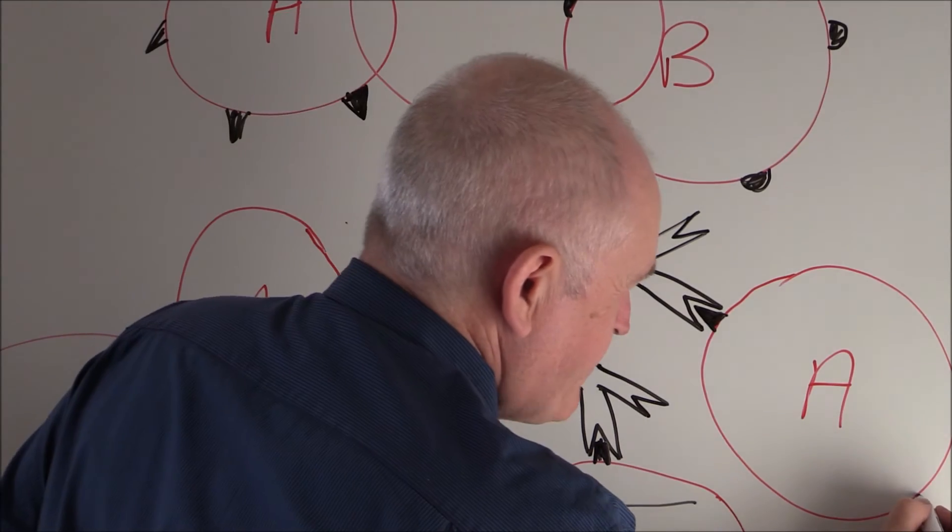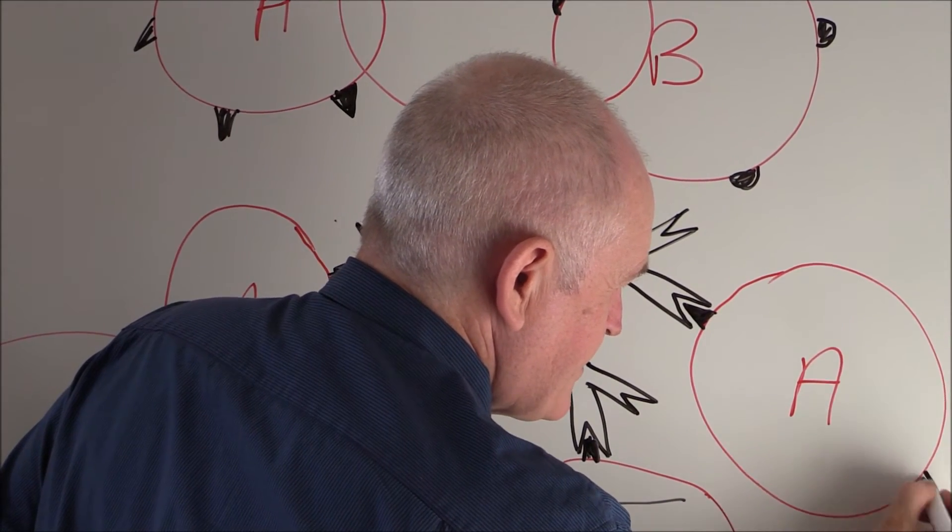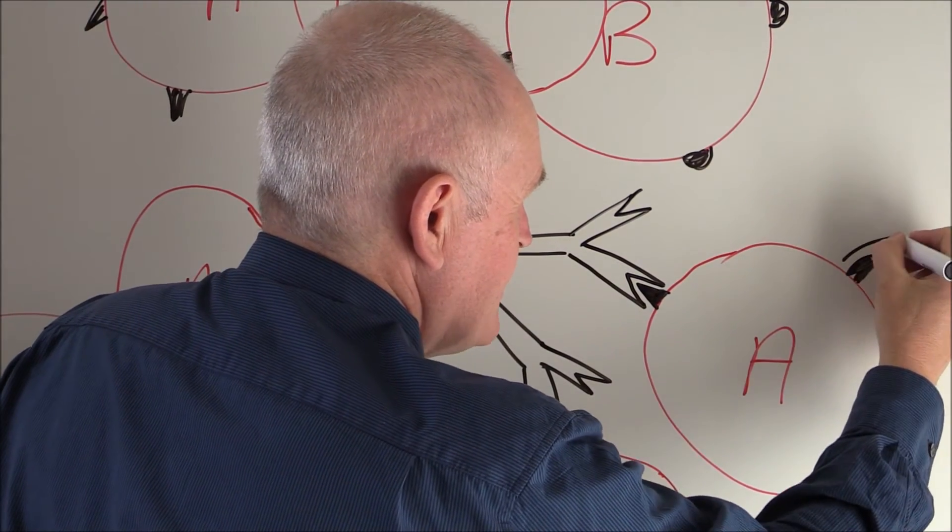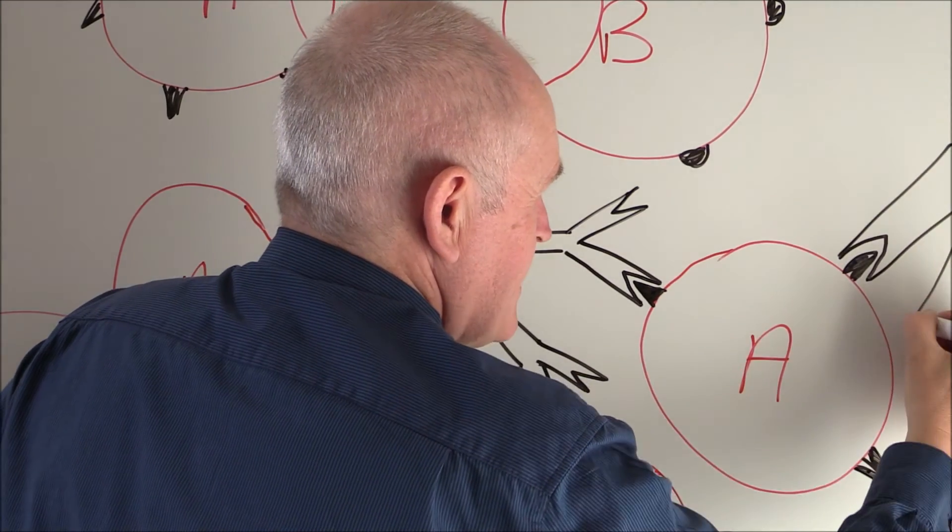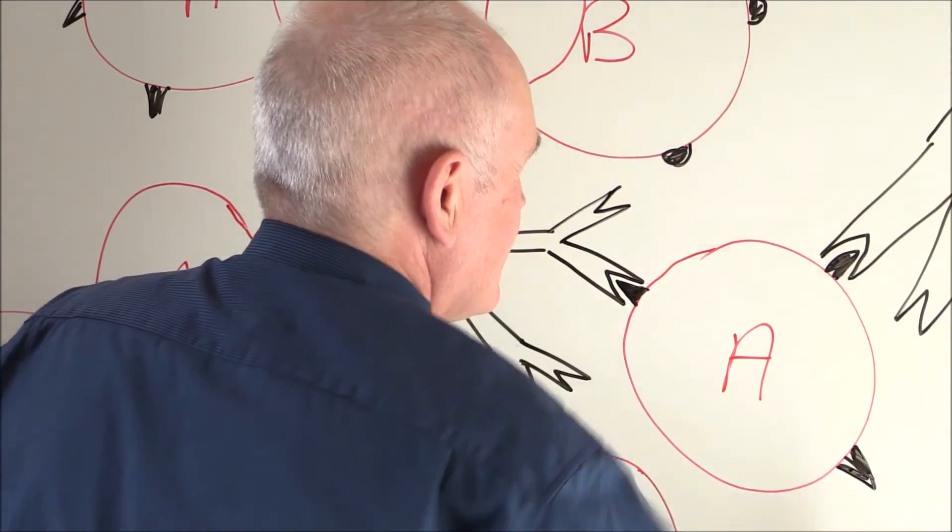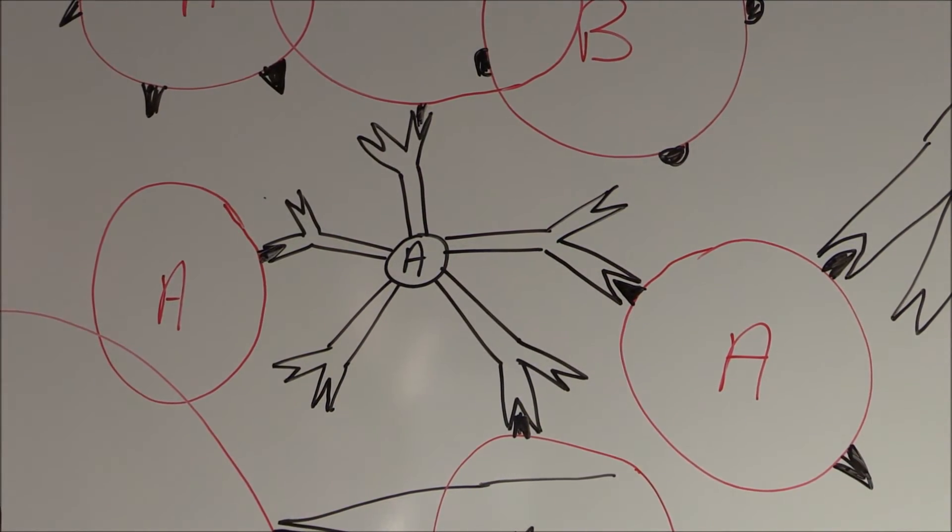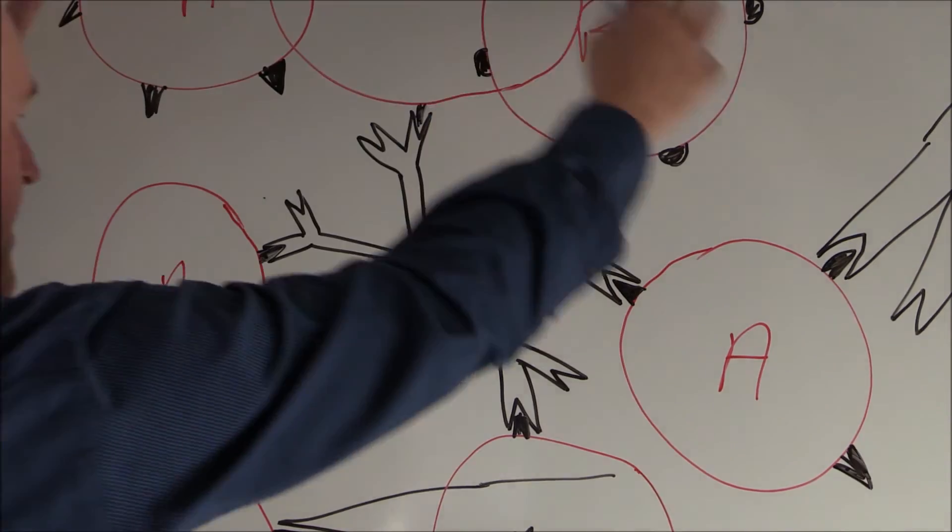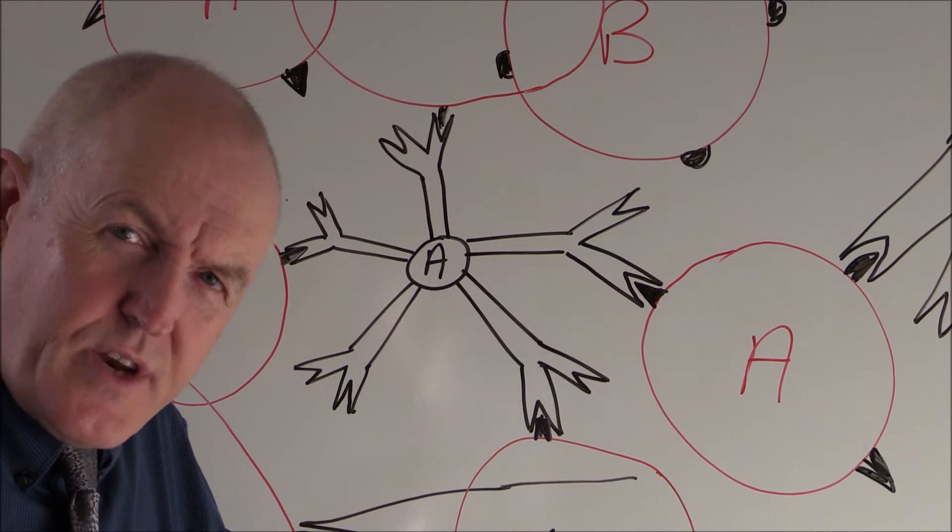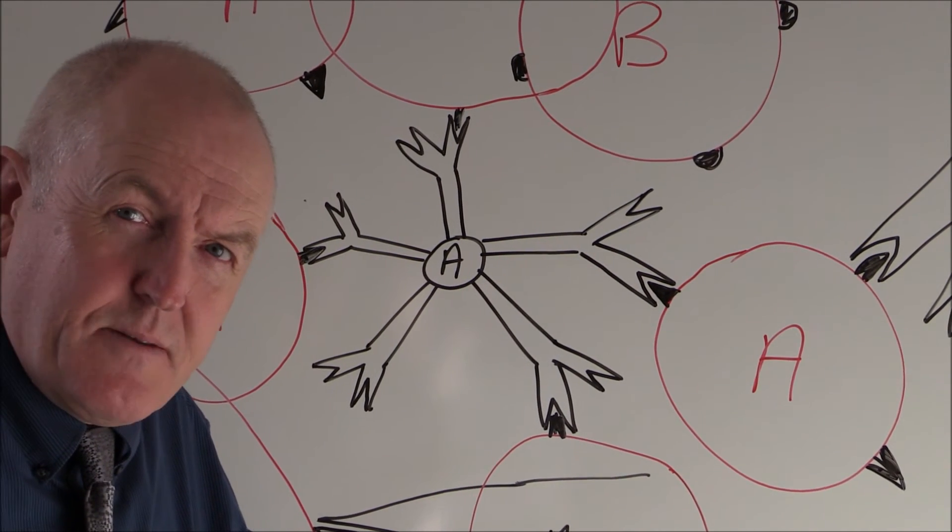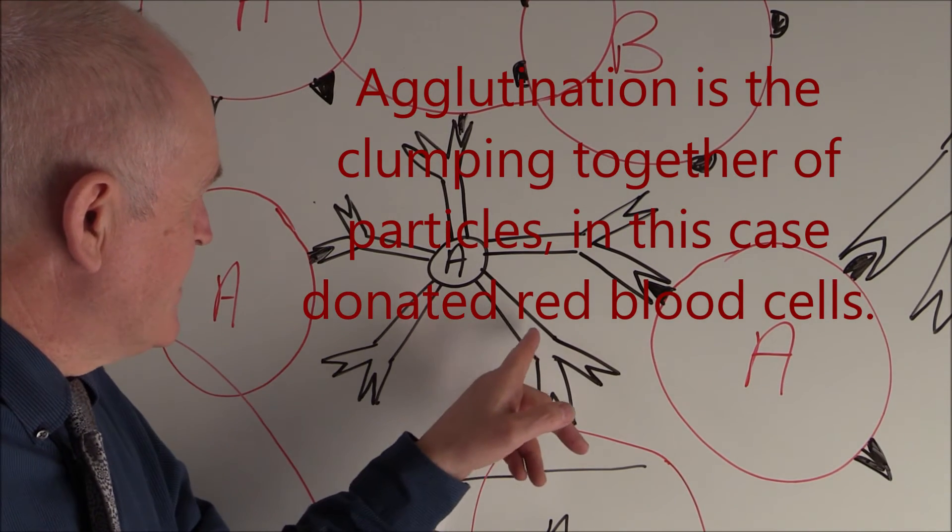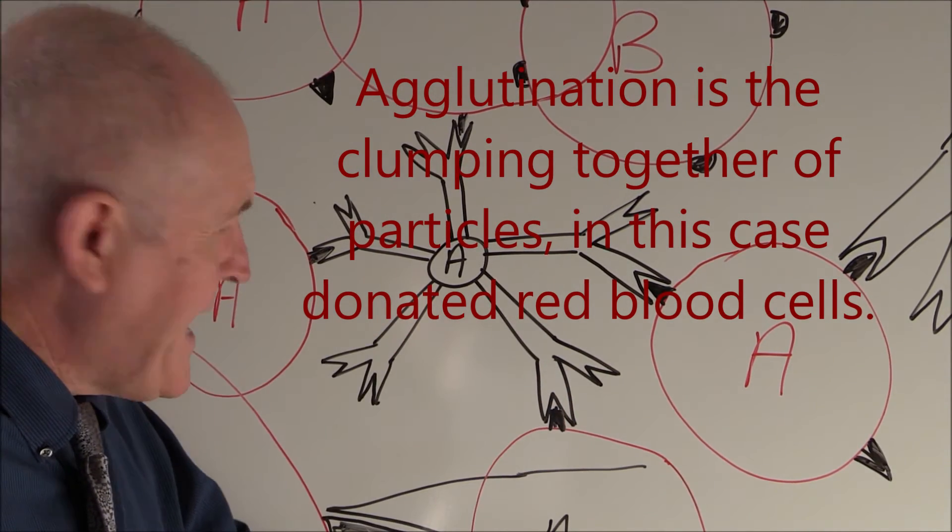There's going to be antigens all over the surface of the red cell, and another antibody can latch onto that. What we can end up with is a huge clump of the donated red cells. The donated red cells will be agglutinated, all stuck together forming little clumps by the recipient's A antibodies.